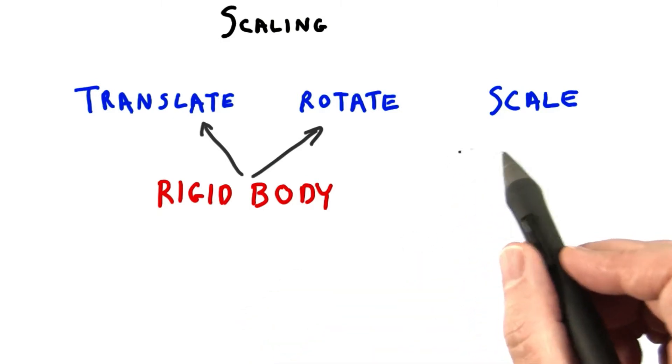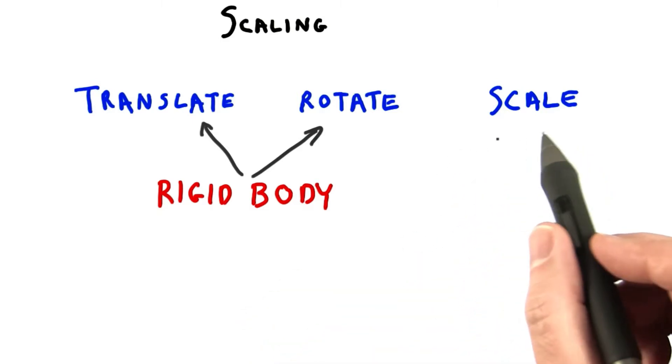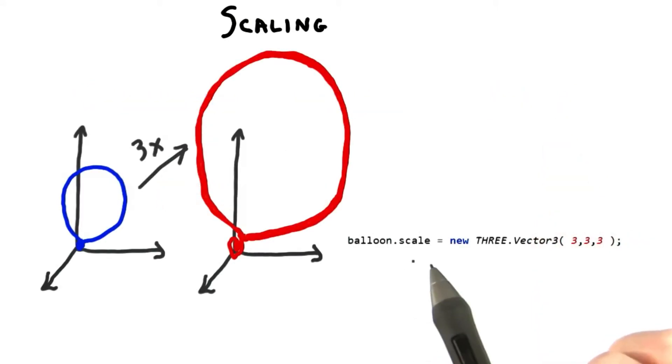Scaling does change an object's overall size, so it's not a rigid body transform. Scaling in 3.js is simple enough. Just as there's a translation and rotation parameter on the object, there's also a scale parameter.